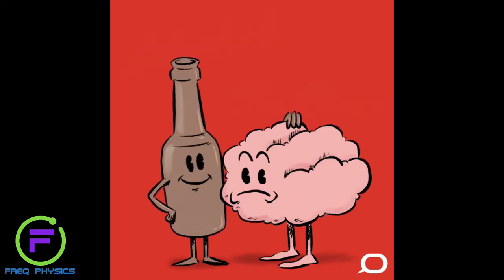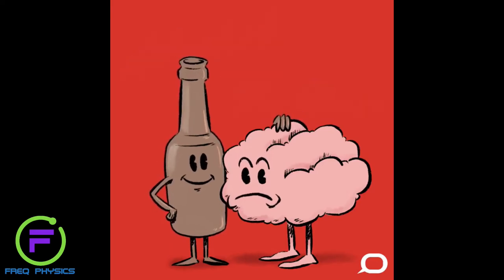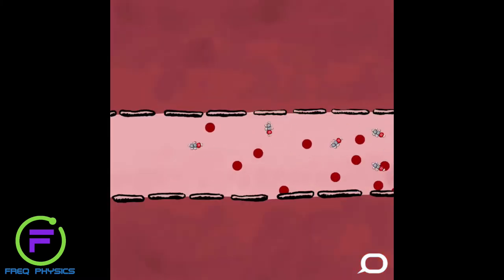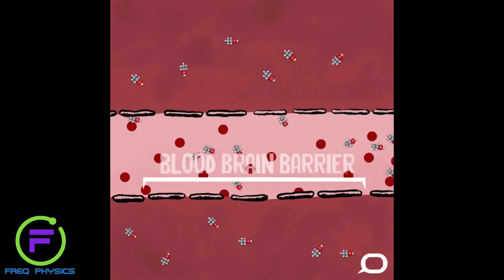Ethanol acts as a depressant within the brain, meaning that it slows down the function of nerve cells. It does this by messing with the brain's neurotransmitters, which it can do because ethanol is such a small molecule that it can pass through the tight capillaries in the brain known as the blood-brain barrier.